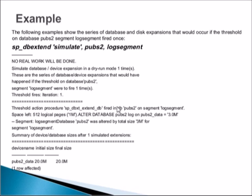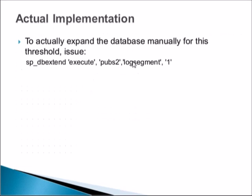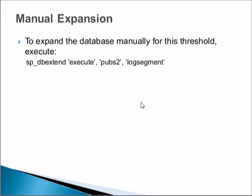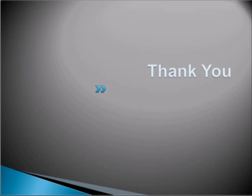For actual implementation, to expand the database manually for this threshold you can issue sp_db_extend execute pubs2 log segment 1, because you configured two log segments so you can use either of the policies you specified. Manual expansion can also be done using sp_db_extend execute pubs2 log segment. That's how it works — this is a simple process for enabling automatic expansion for Sybase databases.